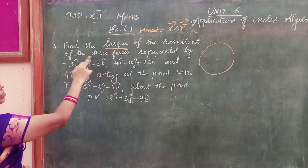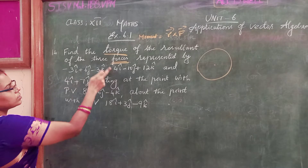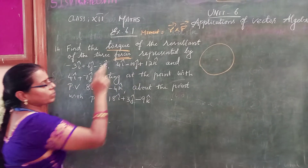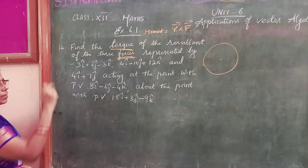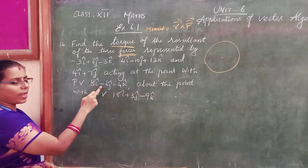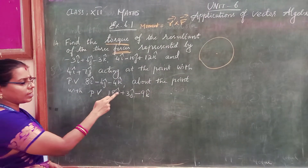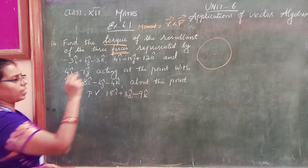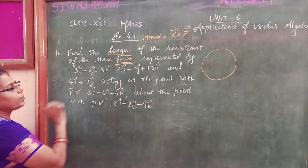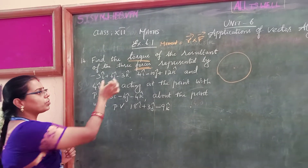We need to find the torque of the resultant of the three forces. Totally three forces are given. The first vector is minus 3i plus 6j minus 3k. Another one is 4i minus 10j plus 12k. And the third is 4i plus 7j. These forces are acting at the point with position vector 8i minus 6j minus 4k, about the point with position vector 18i plus 3j minus 9k. So the forces and position vectors are given.